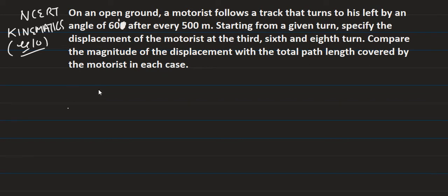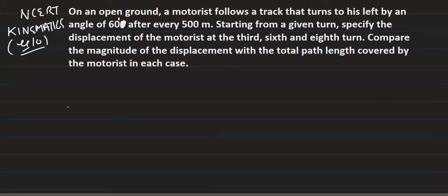Hello students, good evening to all of you. I am going to solve one of the problems from NCERT salt exercise kinematics — question number 10. On an open ground, a motorist follows a track that turns to the left by an angle of 60 degrees after every 500 meters. Starting from the given turn, specify the displacement of the motorist at the end of the third, sixth, and eighth turn, and compare the magnitude of displacement with the total path length covered.